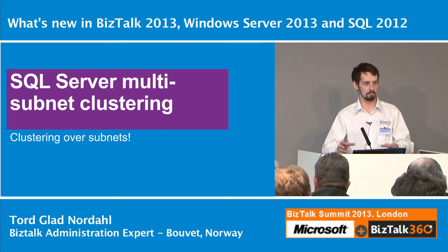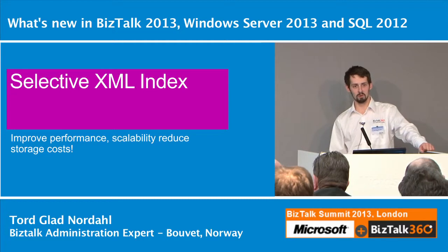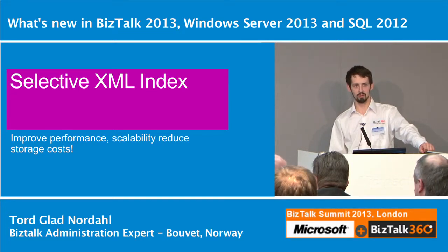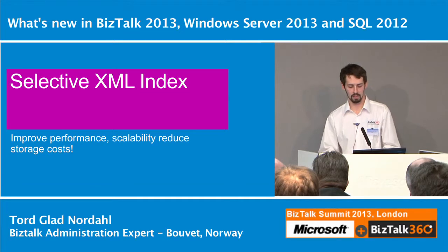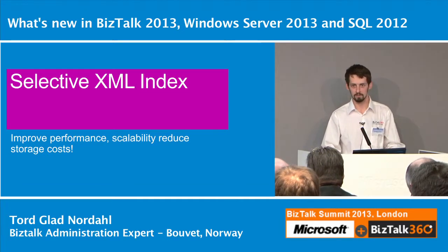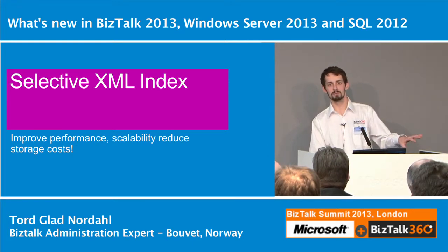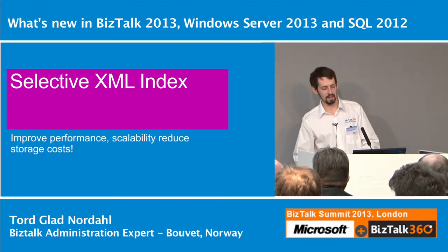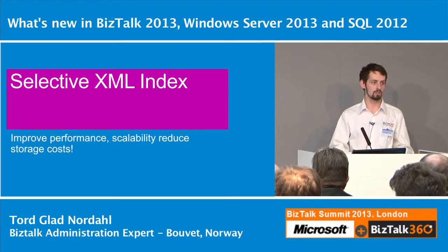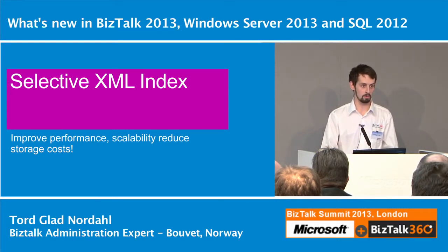You still have clustering but it doesn't have to be on the same location. Putting BizTalk in a subnet, according to Microsoft, can get you 300% performance optimization. XML: the Selective XML Index in SQL Server 2012 provides improved performance, scalability, and reduced storage costs. It's another type of XML index — smaller files and improved performance for queries against SQL.